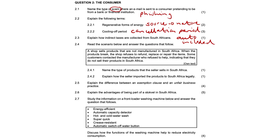2.4.1, name the type of products that the seller sells in South Africa. These are going to be grey goods or parallel imports. 2.4.2, explain how the seller imported the products to South Africa legally — by paying import fees or custom duties, or through unofficial unauthorized distribution channels brought in from another country without the consent of the manufacturing country. There are two possible answers.